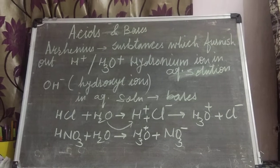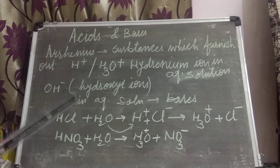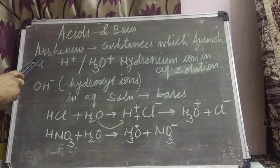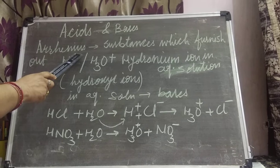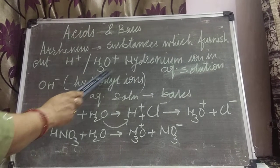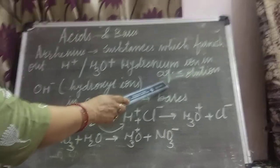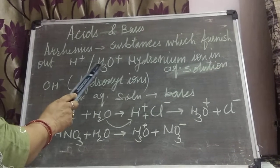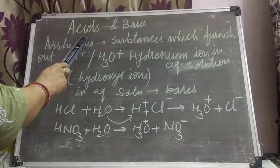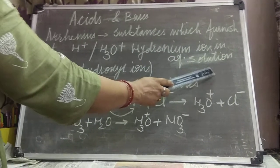We have done some properties of acid and bases. But I know that many students still don't have the concept of what acid and bases actually are. So I am taking the concept given by scientist Arrhenius. According to him, a substance which furnishes out H⁺ ions or hydronium ions in aqueous solution — whenever a substance is dissolved in water giving out H⁺ or hydronium ion H₃O⁺ — that substance is regarded as acid.